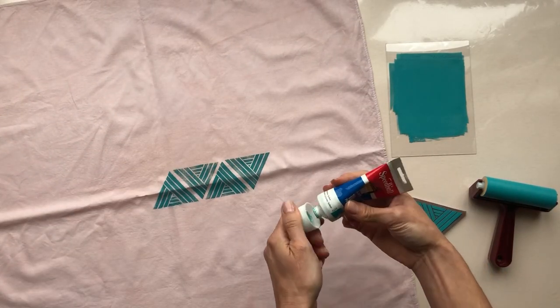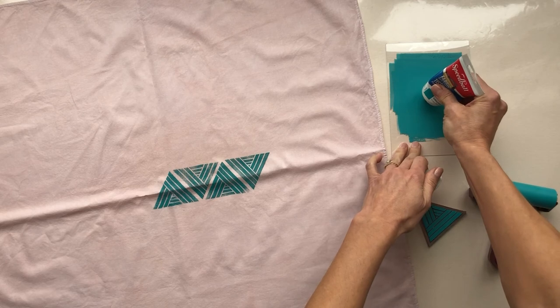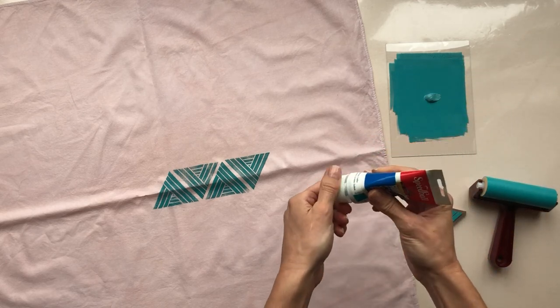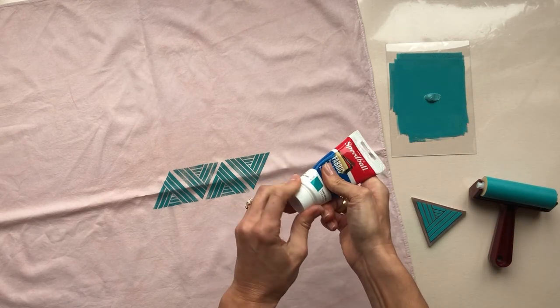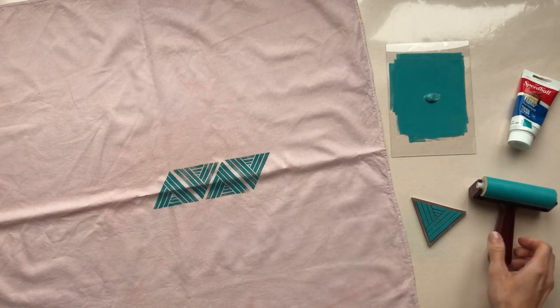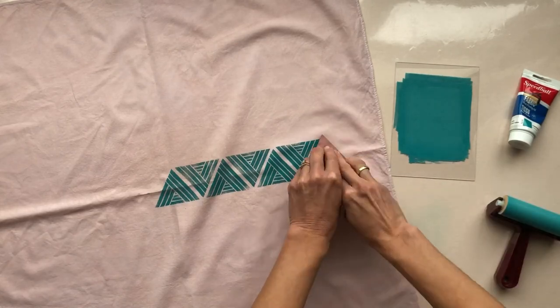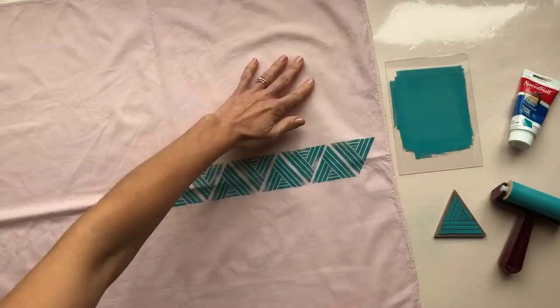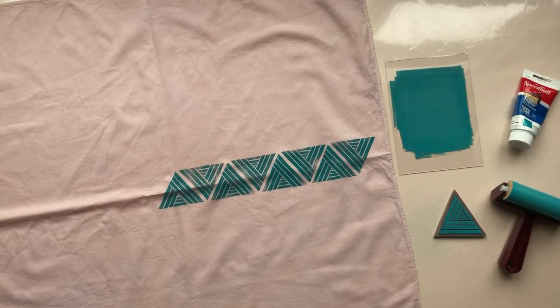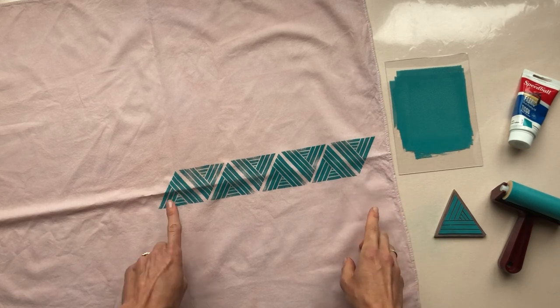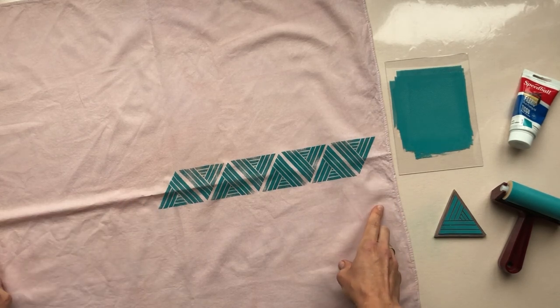So I've done four impressions and I'm going to add just a little bit more ink because I can tell it's starting to fade. So now that I've reached the end on this side, I'm going to go ahead and extend it out to the left.